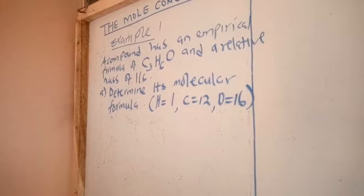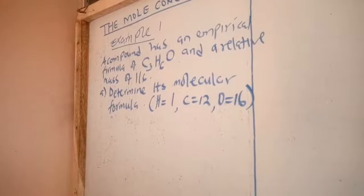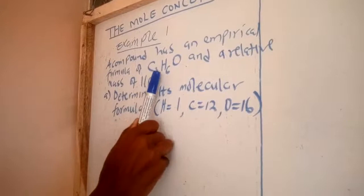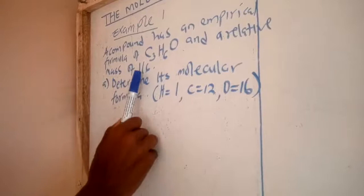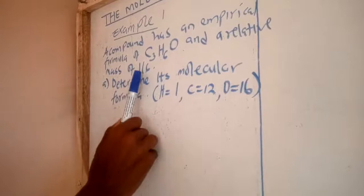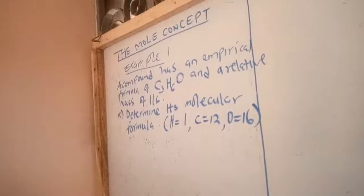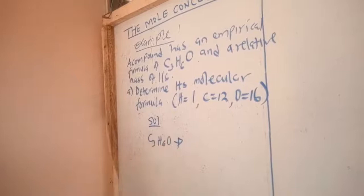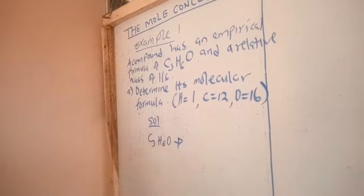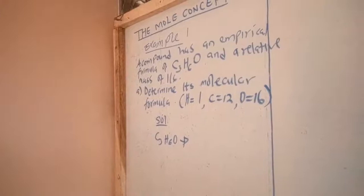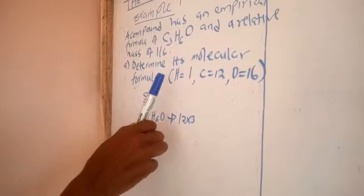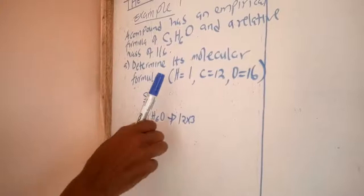In this question, you are first given the empirical formula C3H6O — there is only one atom of oxygen. The molecular mass is given as 116. What you are supposed to do is ask yourself: what is the molecular mass of the empirical compound? Given the empirical formula C3H6O, you need to get the empirical mass. Carbon's relative atomic mass is 12, and you multiply by 3 because there are 3 atoms of carbon.